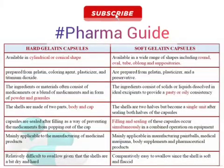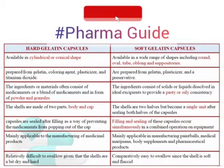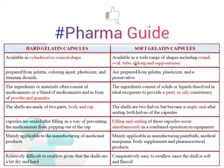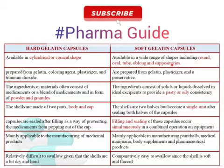Now we will see what is the difference between hard gelatin and soft gelatin capsules. Hard gelatin capsules are available in cylindrical or conical shape, whereas soft gelatin capsules are available in round, opal, tube, oblong and suppository shape.